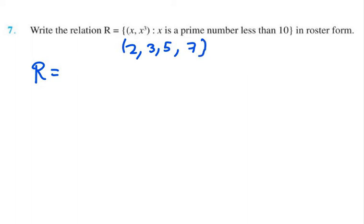So putting the value of 2 first. So it will be 2 comma 2 cube. 2 cube is 8. So first element. Second element we need to put 3 here. 3 as x. So 3 comma 3 cube. 3 cube will be 27.